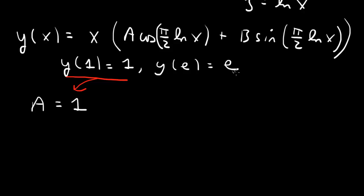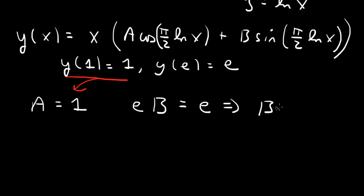From the second boundary condition, y of e equals e. Log e is 1, and cosine(pi over 2) is 0, so that term vanishes. Log e is 1 and sine(pi over 2) is 1, so y of e equals e times b. Setting that equal to e, we get b equals 1.